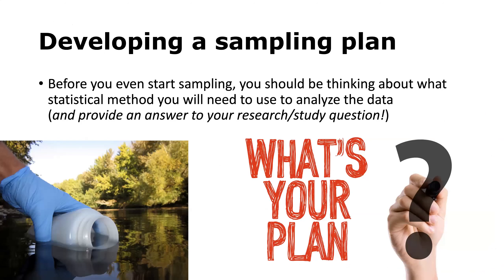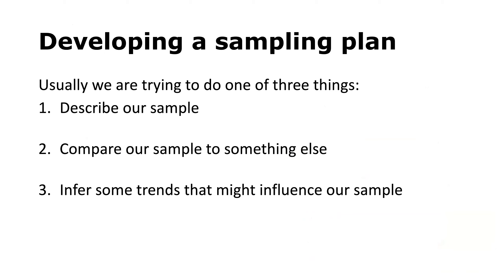Before you even start sampling, you should be thinking about what statistical method will be used to analyze the data and adequately answer the study question. Usually we're trying to do one of three things: describe our sample without comparing it to anything else — just determine the level of a constituent; compare our sample to something fixed like a threshold or regulatory limit using a one-sample t-test; or compare it to some other sample using a two-sample comparison. Or third, infer trends that influence our sample using methods like regression or correlation — how much does a given factor influence the results.